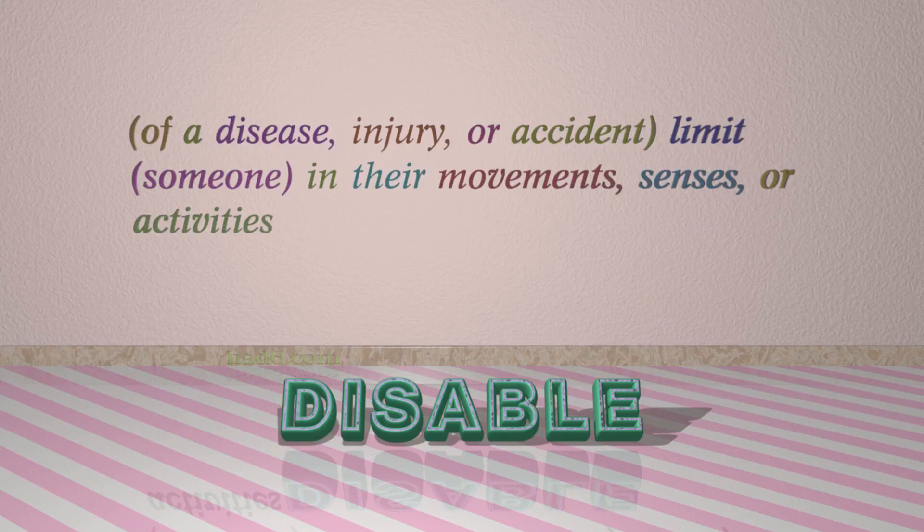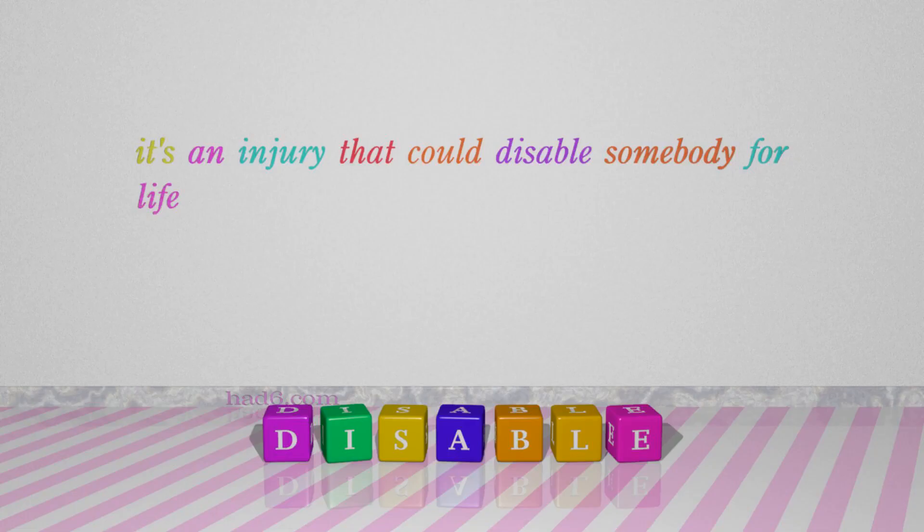Number 7: Disable. Which means: of a disease, injury, or accident — limit someone in their movements, senses, or activities. For example: It's an injury that could disable somebody for life.